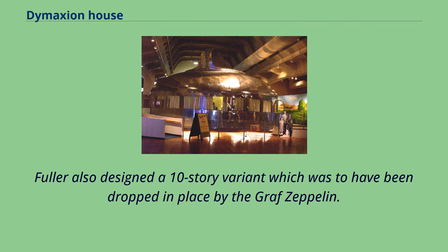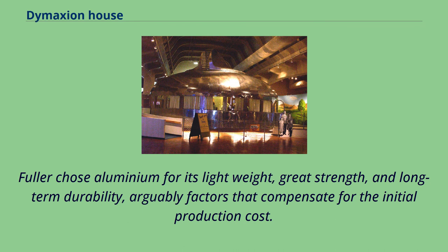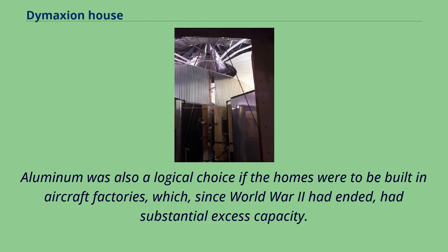Fuller also designed a 10-story variant which was to have been dropped in place by the Graf Zeppelin. Criticisms of the Dymaxion House include its supposed inflexible design, which completely disregarded local site and architectural idiom, and its use of energy-intensive materials such as aluminum rather than low-energy materials such as adobe or tile. Fuller chose aluminum for its lightweight, great strength, and long-term durability — factors that arguably compensate for the initial production cost. Aluminum was also a logical choice if the homes were to be built in aircraft factories, which since World War II had ended had substantial excess capacity.